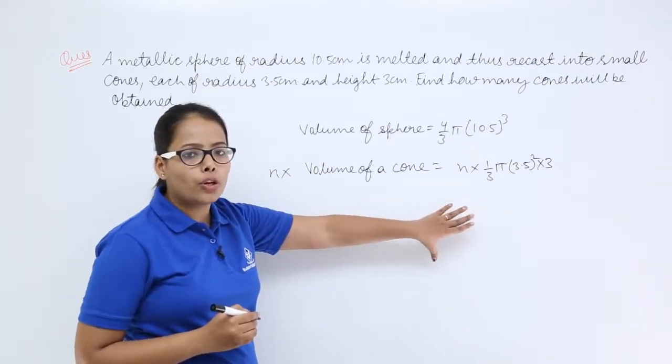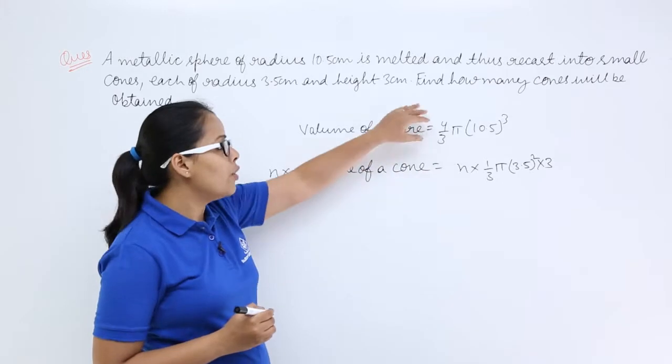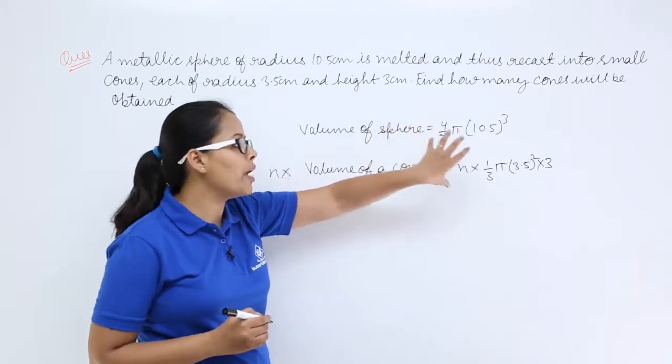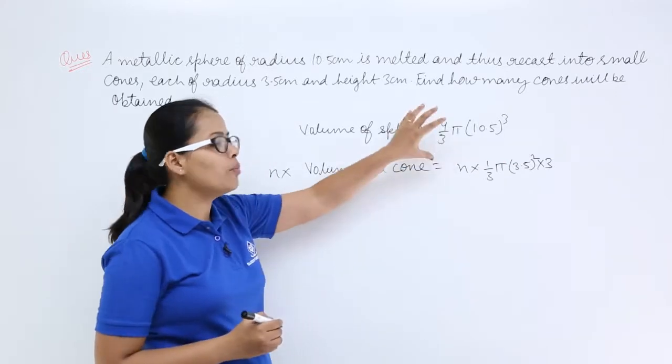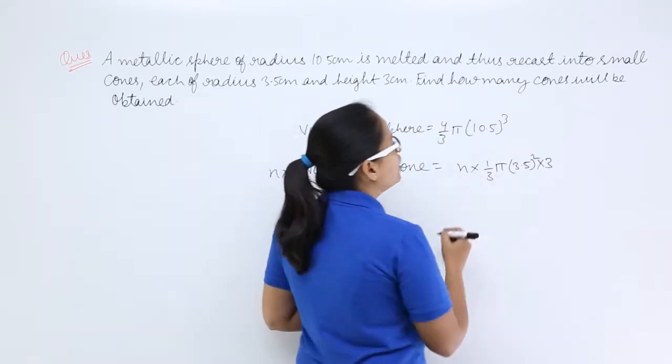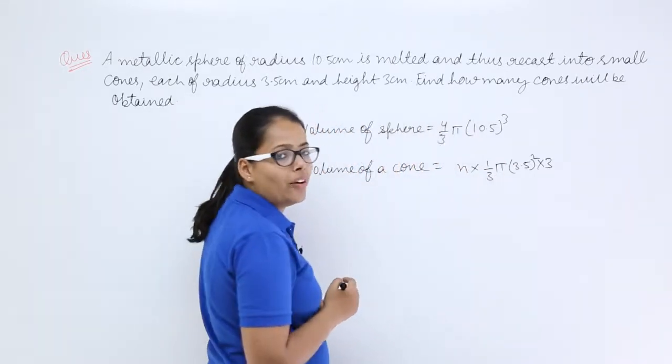So what will you do? As I have told you, volume will remain conserved. You have used this whole volume to make these many number of cones. So let's equate both of them to find out the value of n.